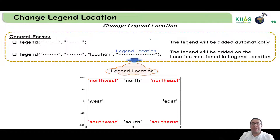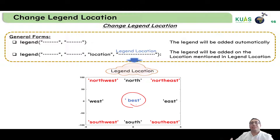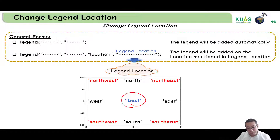Sometimes you want MATLAB to decide the location for you. We have another option called 'best', which lets MATLAB select the best place so the legend will not overlap any part of the figure.